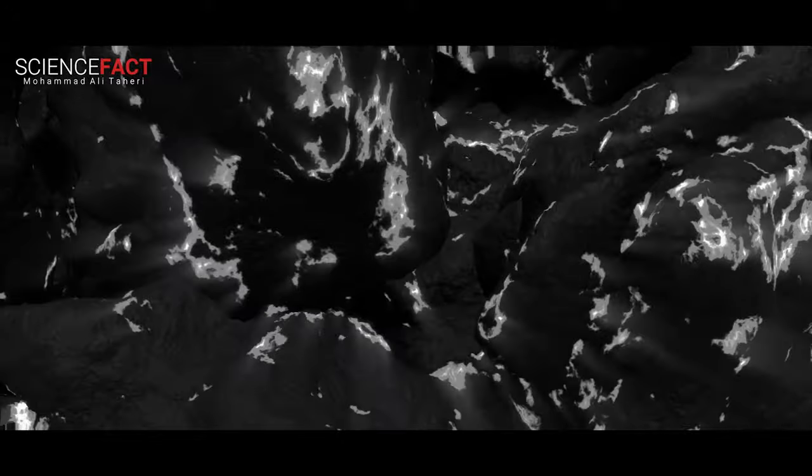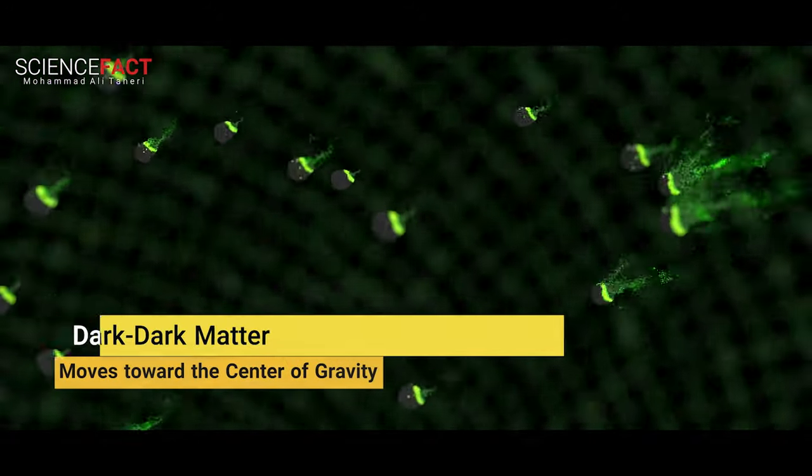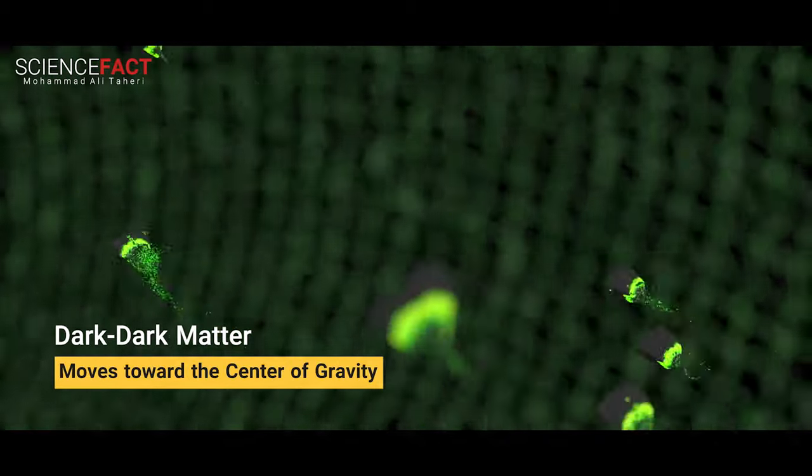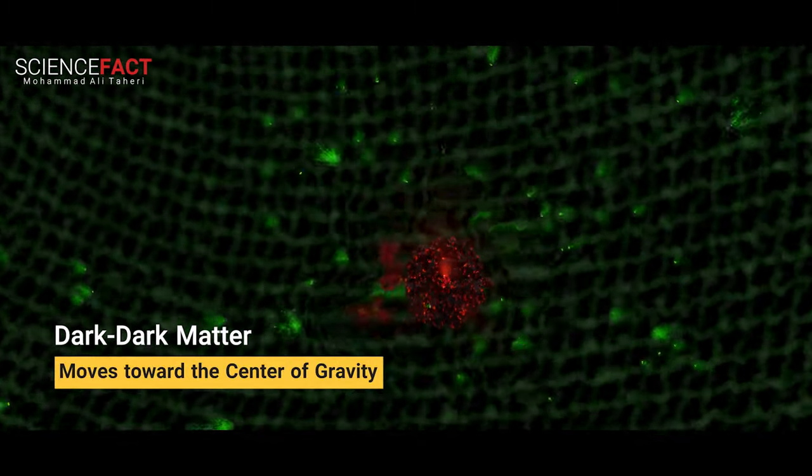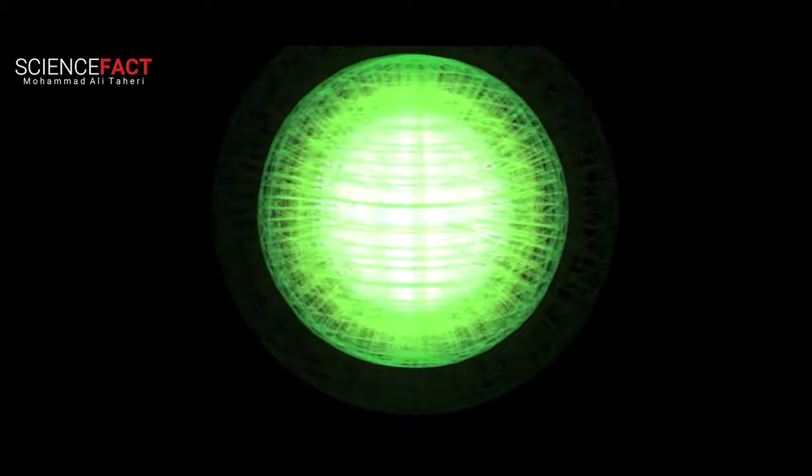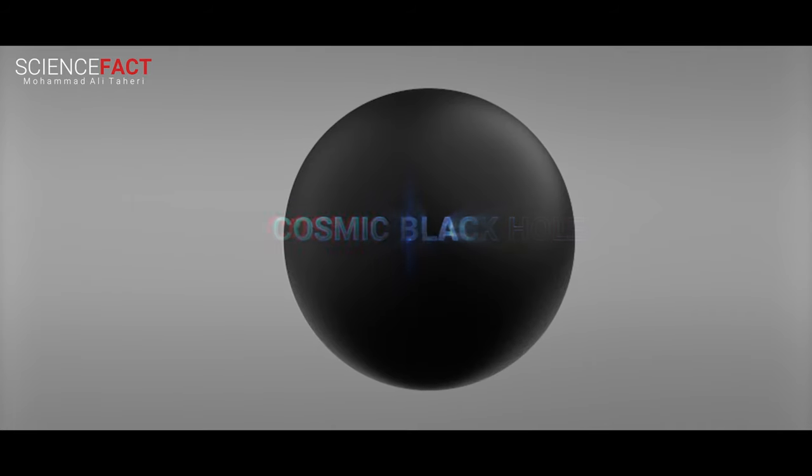But to show this event, we need a visual representation. Dark dark matter moves toward the gravitational center from all directions. The power of gravity intensifies with the joining of dark dark matter to the center of gravity. The dark matter of space rushes toward the gravitational center and in one decisive blow makes a massive press or a formidable quench. The cosmic black hole is born.